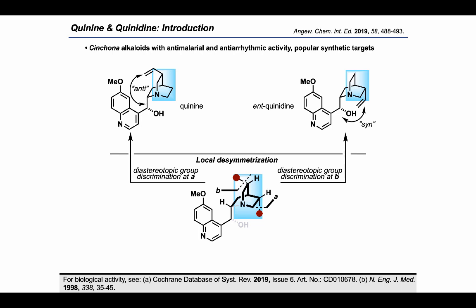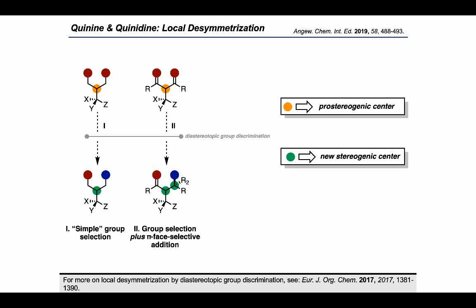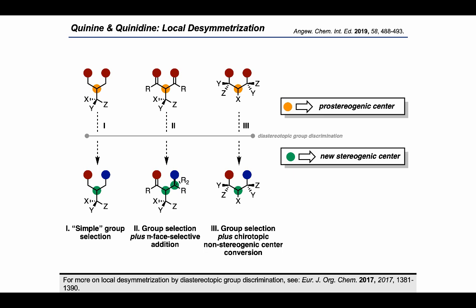To place this approach in context, I want to quickly touch on an idea we talked about before: the categorization of local desymmetrization events. In what we will call Category 1, a simple group selection, the diastereotopic group discrimination results in the formation of a single stereocenter by altering the identity of one of the diastereotopic groups, marked with the red balls. In Category 2, the diastereotopic group selection is accompanied by addition to an unsaturated functional group, which can result in setting more stereocenters than in Category 1. In Category 3, the diastereotopic group discrimination is accompanied by conversion of a chirotopic non-stereogenic center to a stereocenter.